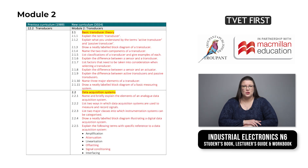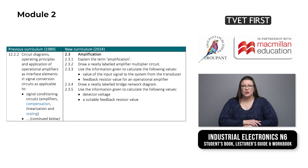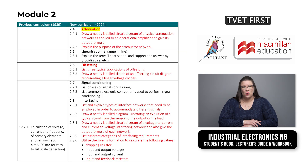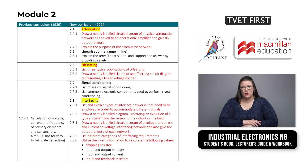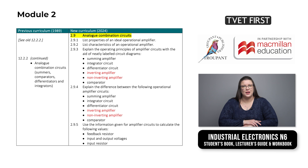Module 2, which is titled Transducers, introduces basic transducer theory and data acquisition systems. The concepts of compensation and scaling have been left out of the new curriculum. Attenuation, offsetting and much of the section on interfacing are new. The new section on analog combination circuits includes inverting and non-inverting amplifiers.